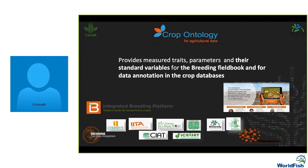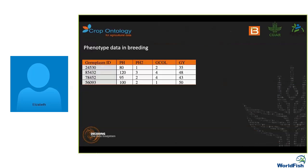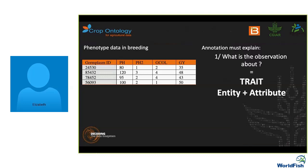The Crop Ontology provides a framework for describing measured trait parameters and their standard variables so they can be directly consumed by electronic field books and used for data annotation in crop databases. This was a collaborative project with all centers having mandate crops and deploying a breeding management system. When you receive an Excel file from a breeding program, the columns are cryptic — breeders use abbreviations. An annotation explains what the observation is about: a trait has an entity (a part of the plant) and an attribute, like leaf color or a disease symptom.